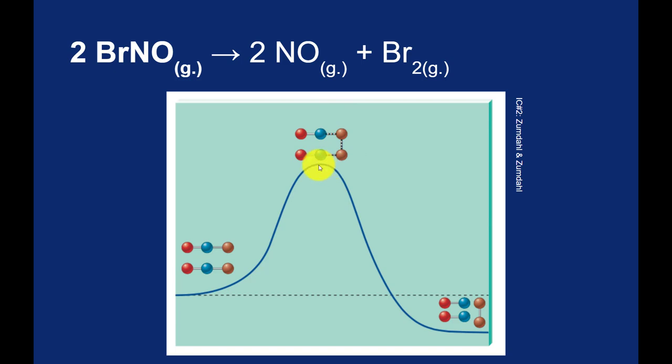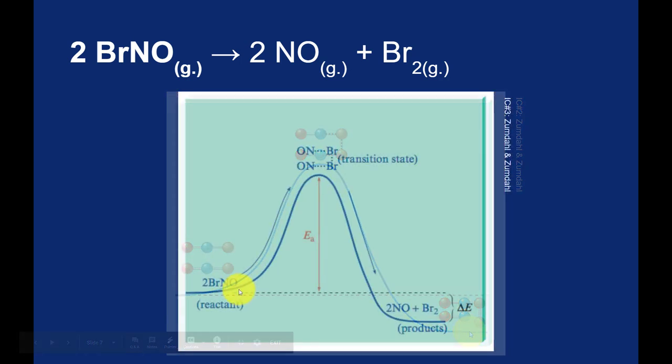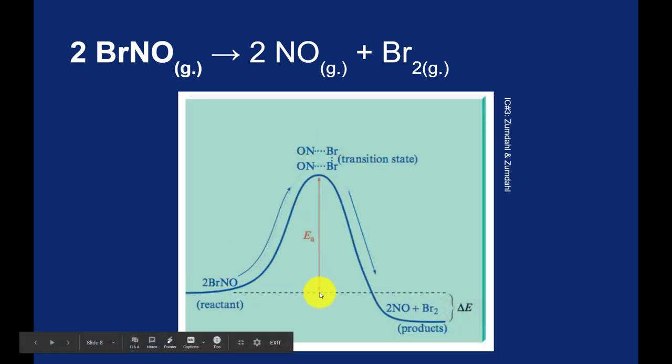Once we've reached this point, then we can release energy and form our products. So even though this is an exothermic process, there is energy that has to be put into the system, the activation energy, in order for energy to be ultimately released. We can talk about our activation energy as the energy from where we're starting up to the activated complex. And then we can talk about the change in enthalpy of the reaction as a difference from where we started to where we ended.